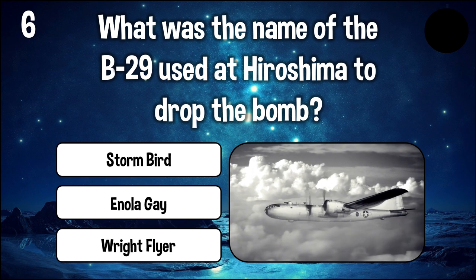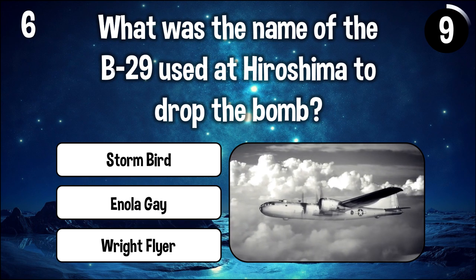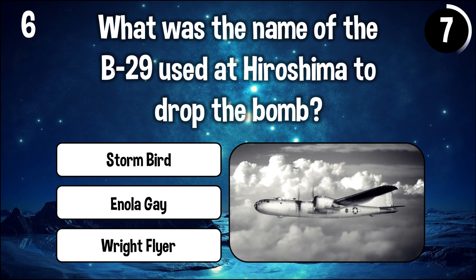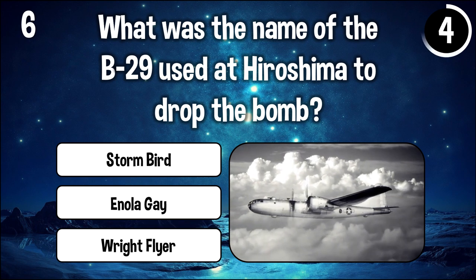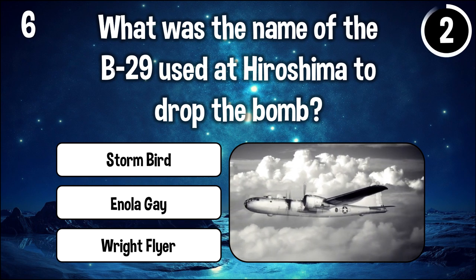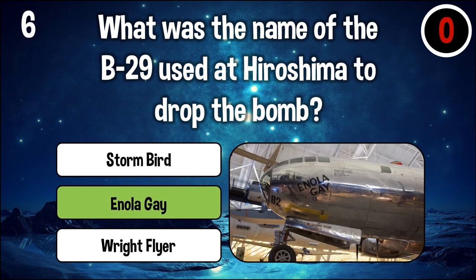What was the name of the B-29 used at Hiroshima to drop the bomb? The answer is Enola Gay.